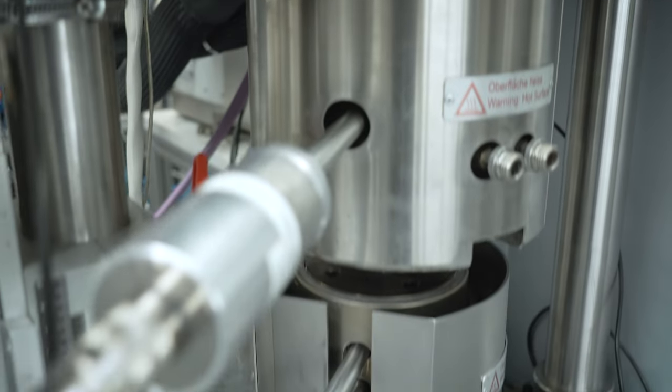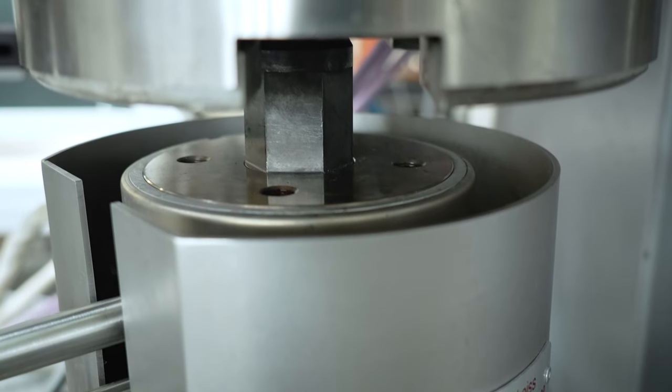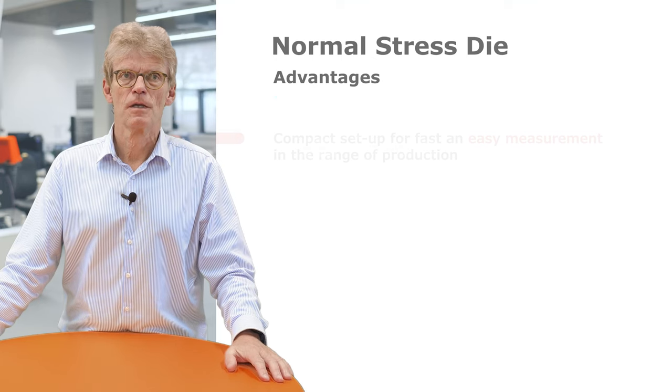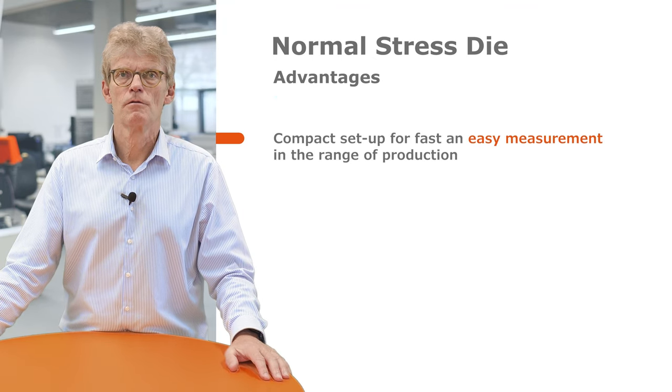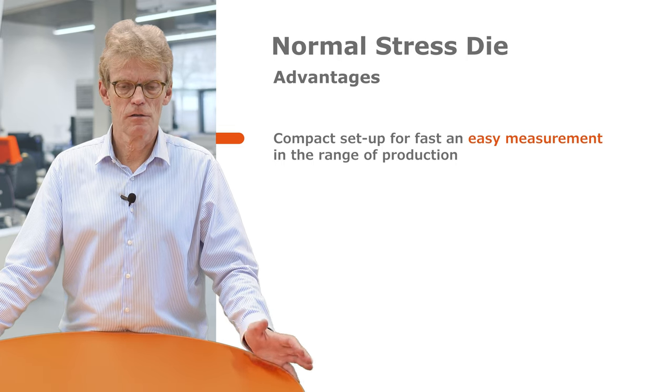So we have a clear discrimination of the materials, just by one measurement with our sharkskin die. We can state that our normal stress die is a nice tool to discriminate between materials in regard of processability.